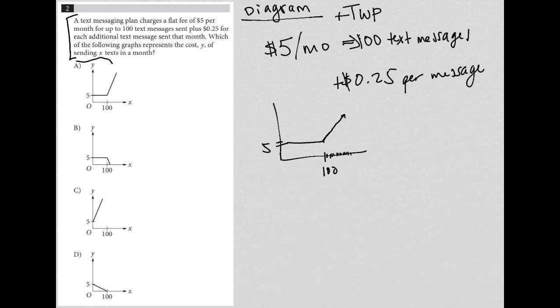That would be answer choice A. B starts off good, but then at 100, it starts to go down in cost, which doesn't make sense.